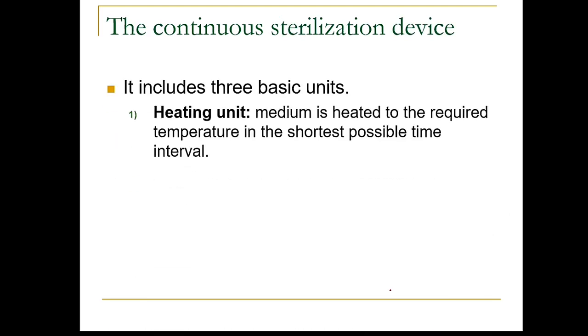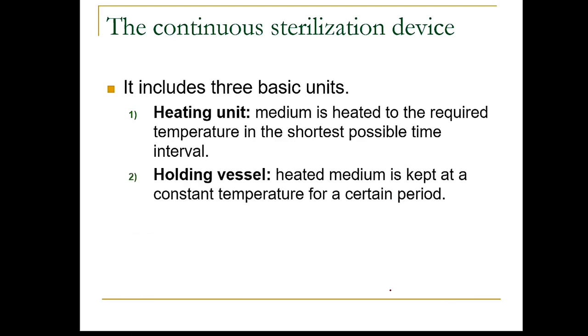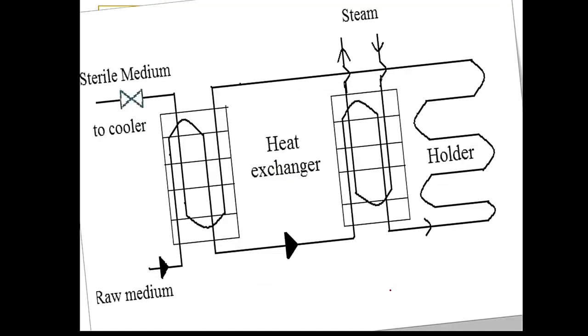The continuous sterilization device includes three basic units. First is a heating unit: medium is heated to the required temperature in the shortest possible time interval. The holding vessel: heating medium is kept at a constant temperature for a certain period. Cooling: medium is cooled to the culture temperature.